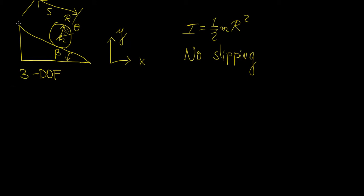Now suppose we draw an axis perpendicular to the incline surface and call that displacement from the top s. We can express the translation of the disk with respect to that axis — a horizontal motion as seen from the frame of reference of the incline surface. The other motion is rotation, giving us only two variables, s and theta: a two-degree-of-freedom system requiring only two equations of motion.